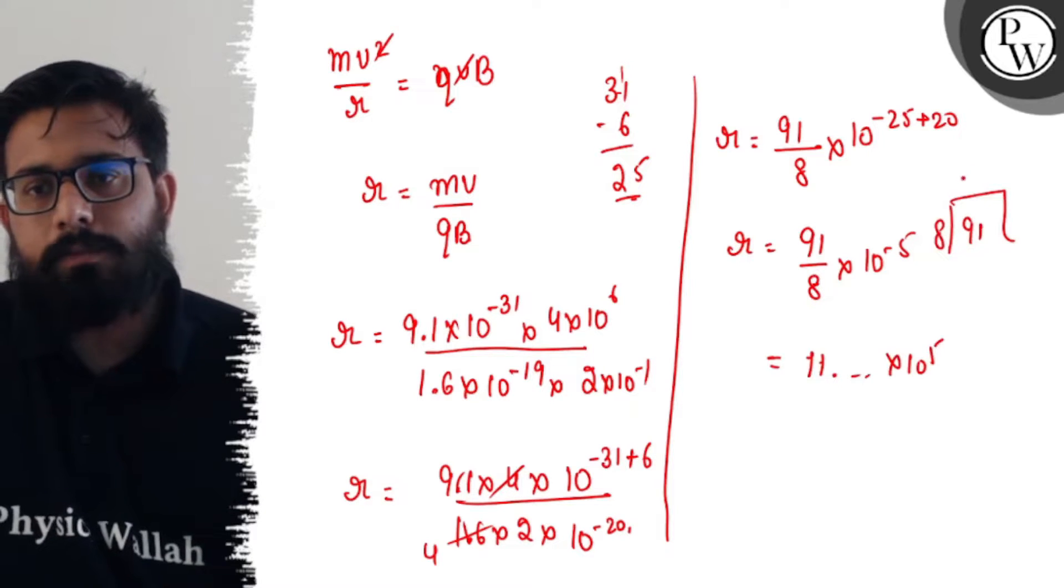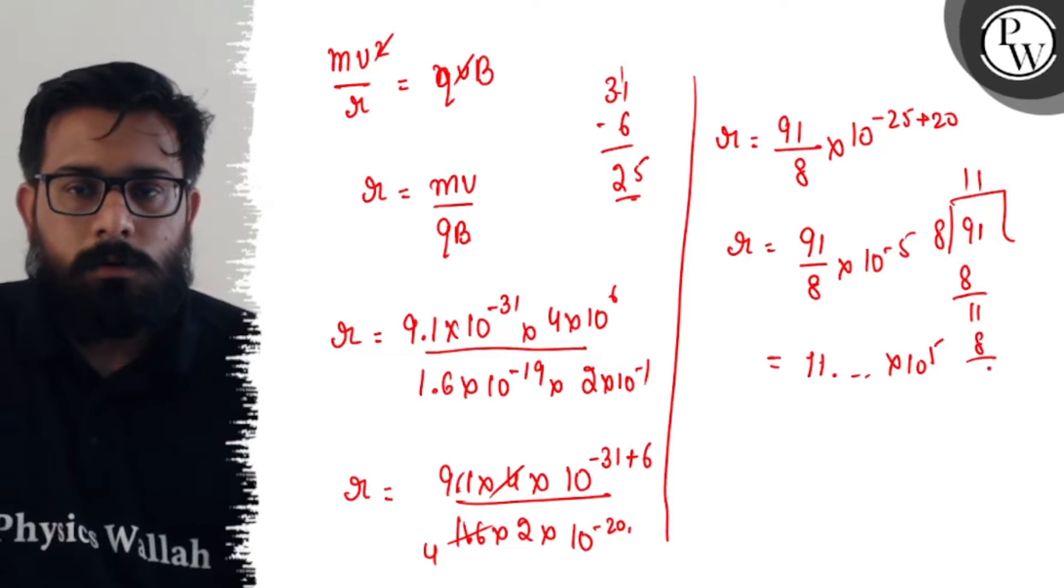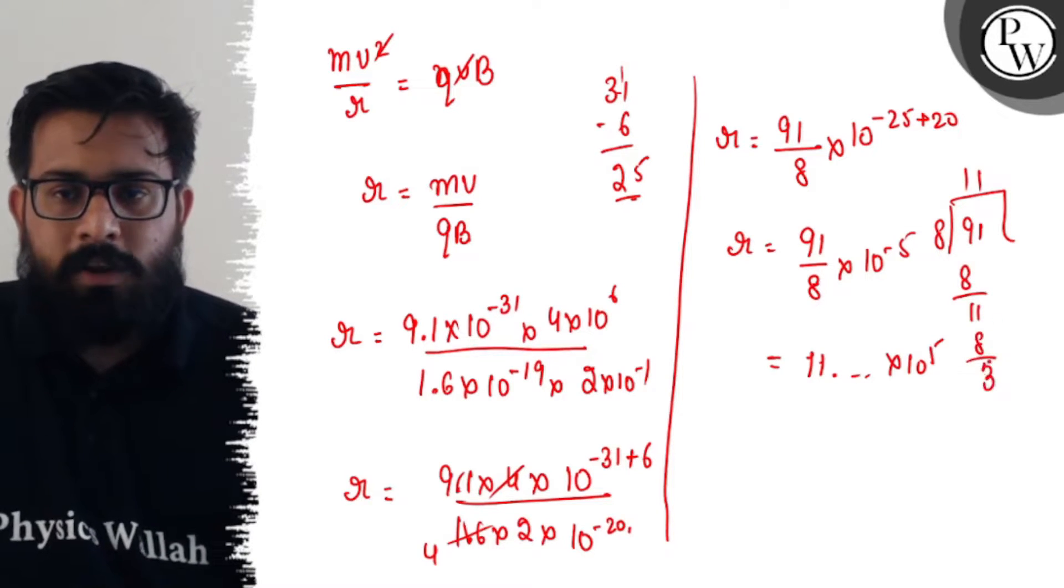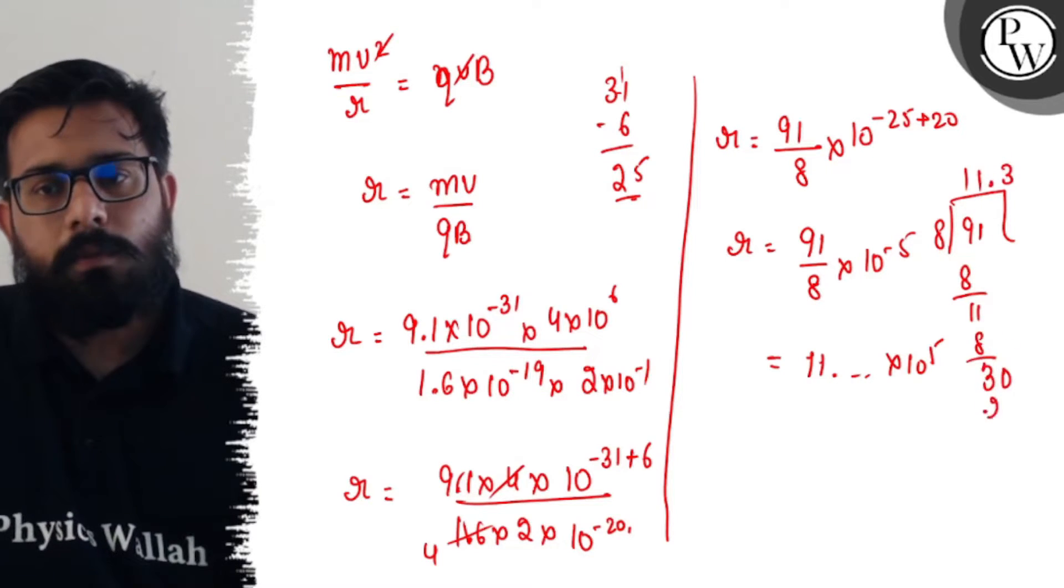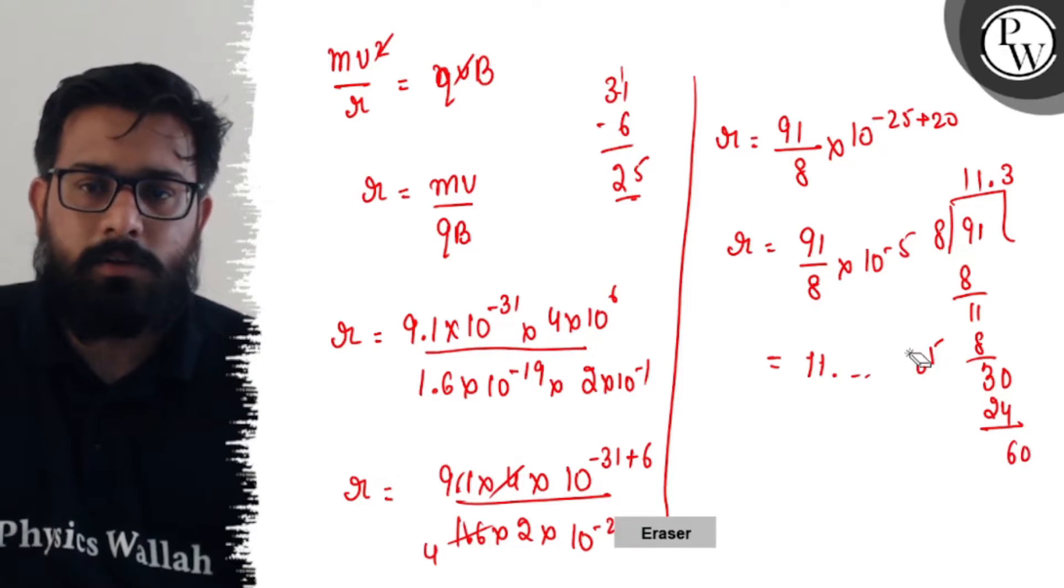91÷8: 1, 1, this would be 3 decimal, 8×3 is 24, again you get this value 16. Further on if you solve this part, you will get the value.